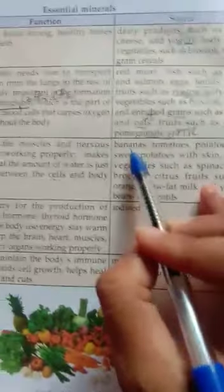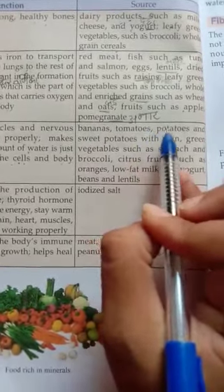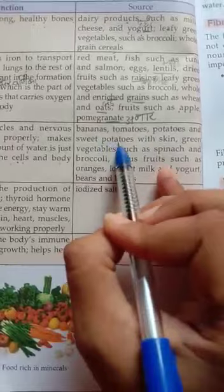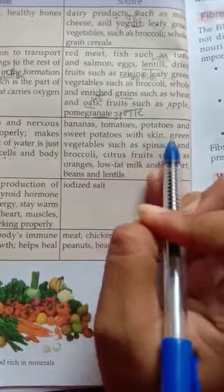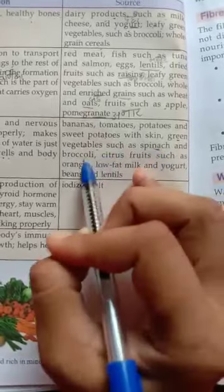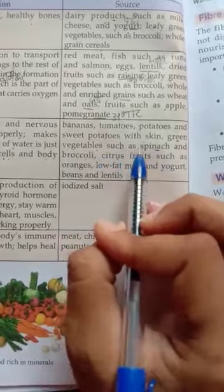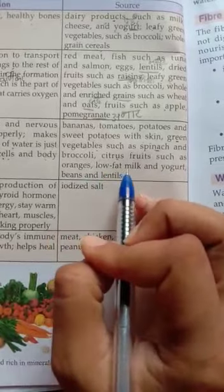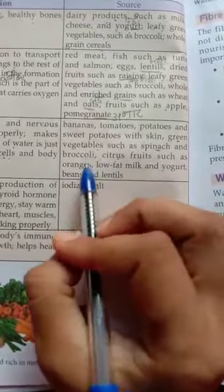Where we find potassium: bananas, tomatoes, potatoes, sweet potato with skin, green vegetables such as spinach and broccoli, citrus fruits like oranges, low-fat milk, yogurt, beans, and natural fruits.